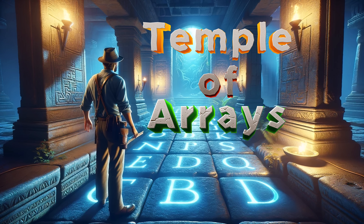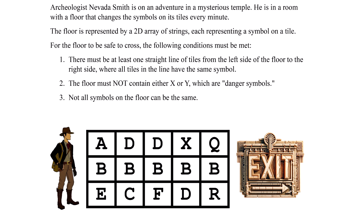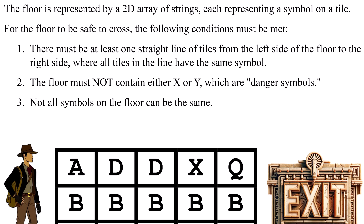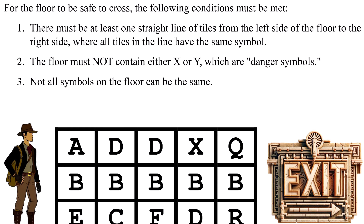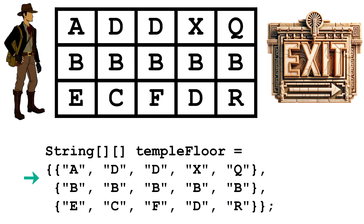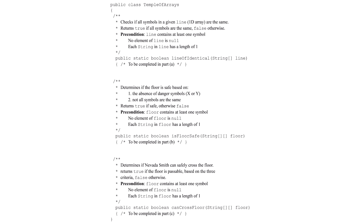Nevada Smith and the Temple of Arrays. For this AP Computer Science A-style FRQ, I recommend you do the problem using the linked PDF. To jump ahead to the answers, check the timestamps. Archaeologist Nevada Smith is on an adventure in a mysterious temple. He is in a room with a floor that changes symbols on its tiles every minute. The floor is represented by a 2D array of strings, each representing a symbol on the tile. For the floor to be safe to cross, the following conditions must be met: 1. There must be at least one straight line of tiles from the left side of the floor to the right side, where all the tiles in the line have the same symbol. 2. The floor must not contain either X or Y, which are danger symbols. 3. Not all symbols on the floor can be the same.